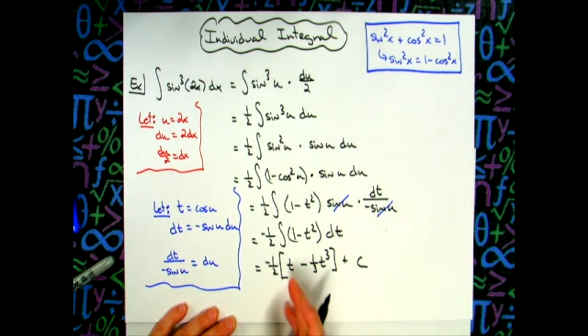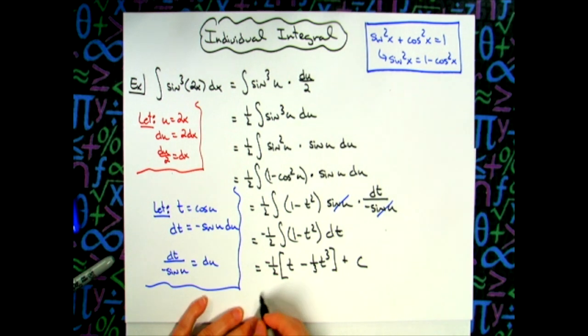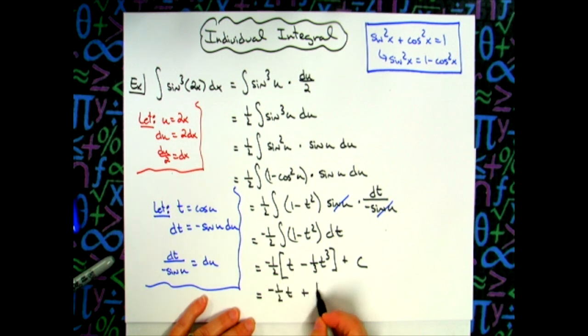At some point in time, either you do it now or you do it later, but that negative one half needs to be distributed back in. So if I distribute that back in, I would have negative one half t. Negative times negative would make it positive one sixth t to the third, and then my plus c.